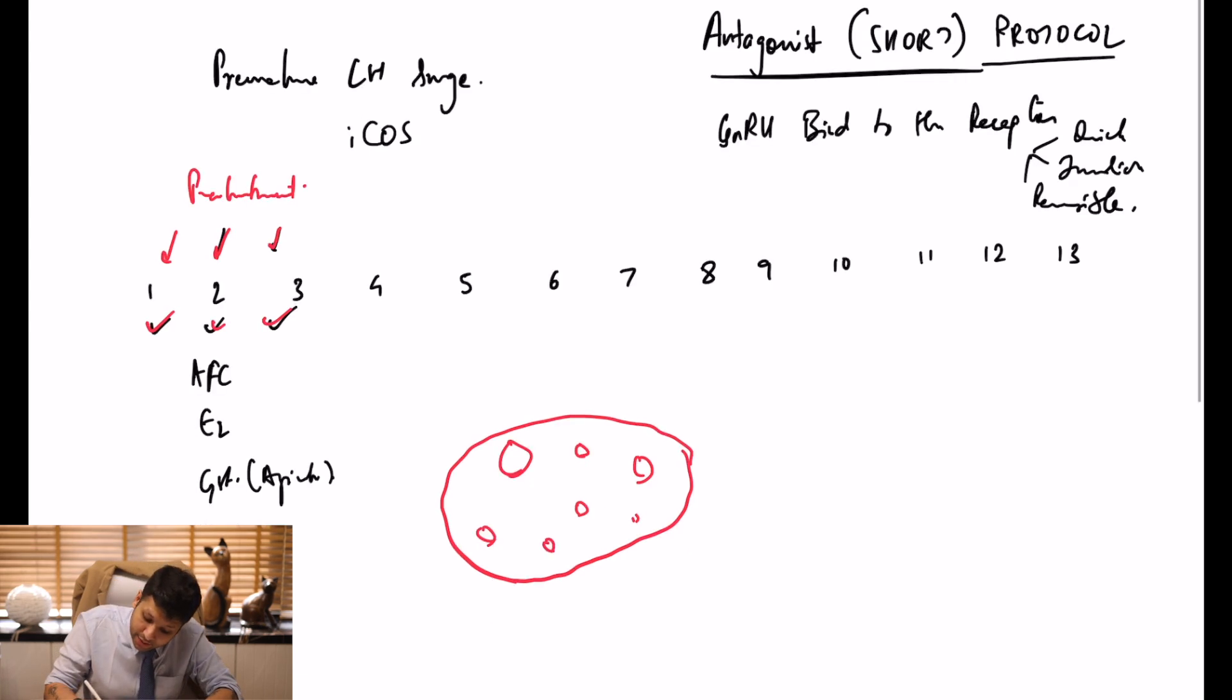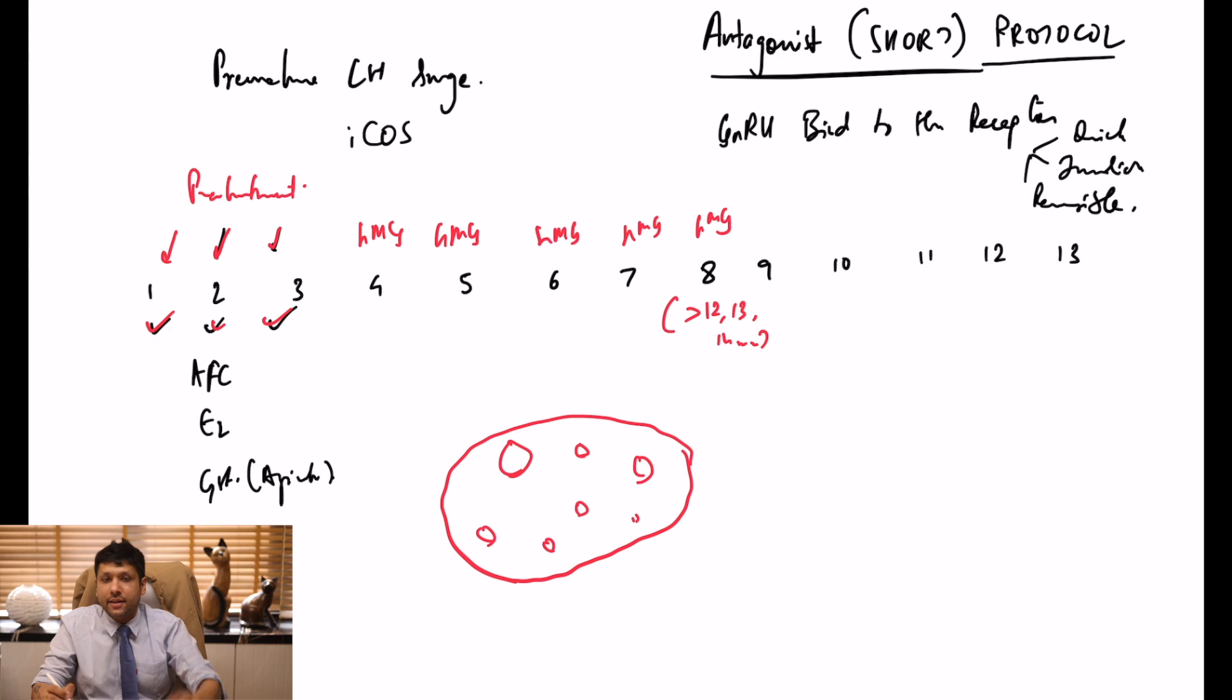After you start the HMG or recombinant FSH, let's say on day 4, 5, 6, 7, 8. After administering 5 shots of HMG, usually people call patients back for ultrasound to assess the size of the lead follicle. Is it 12, 13, 14 millimeters? Then they decide on addition of antagonist.